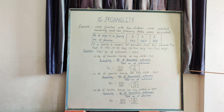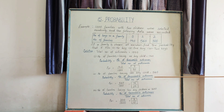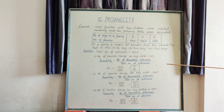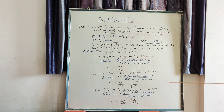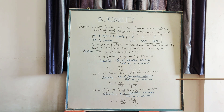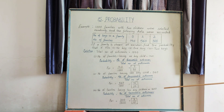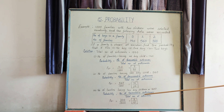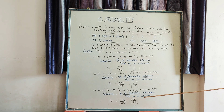Next, we find the probability of one boy child. The number of families having one boy child is 560. Using the formula, probability equals 560 upon 1000, which is equal to 14 upon 25. Next, we find the probability for two boy children. The number of families having two boy children is 300, so the probability equals 300 upon 1000, which is equal to 3 upon 10.